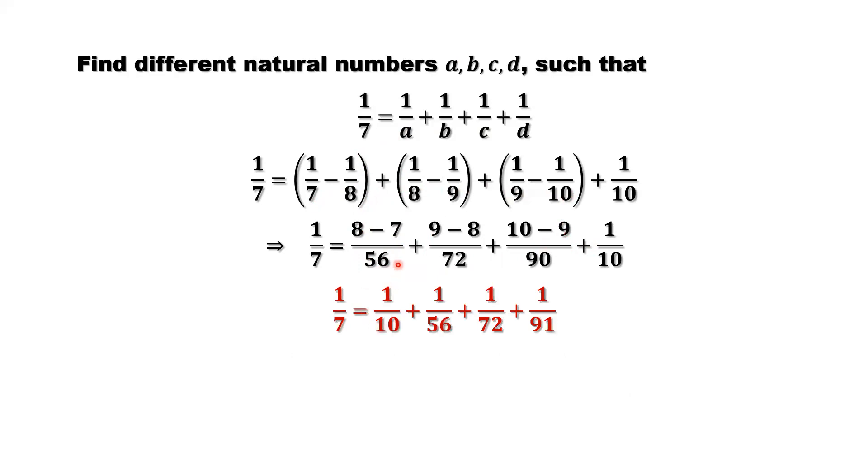Now this is 1 over 10. We have 1 over 56, 1 over 72, 1 over 91. We put the denominators in ascending order.